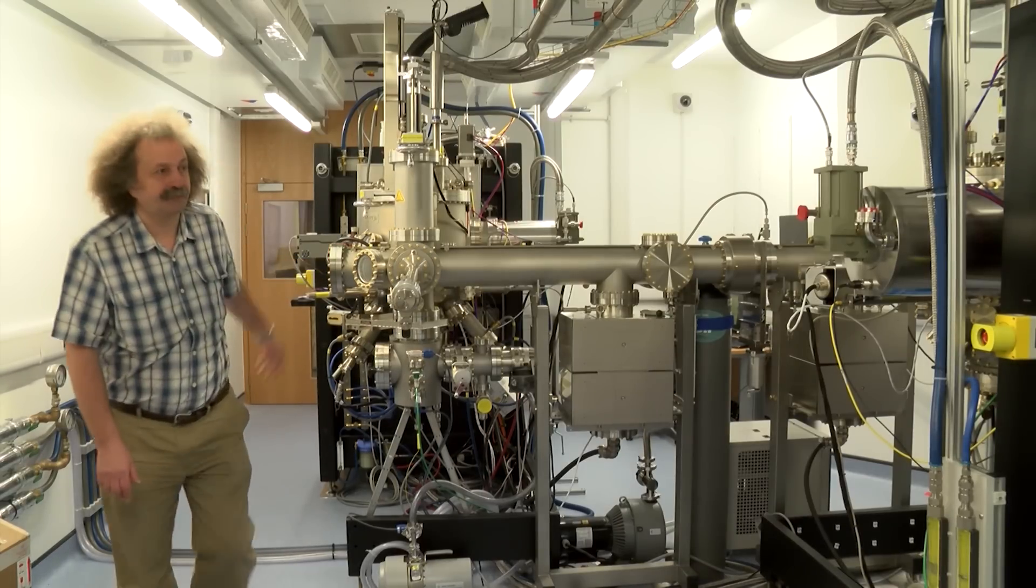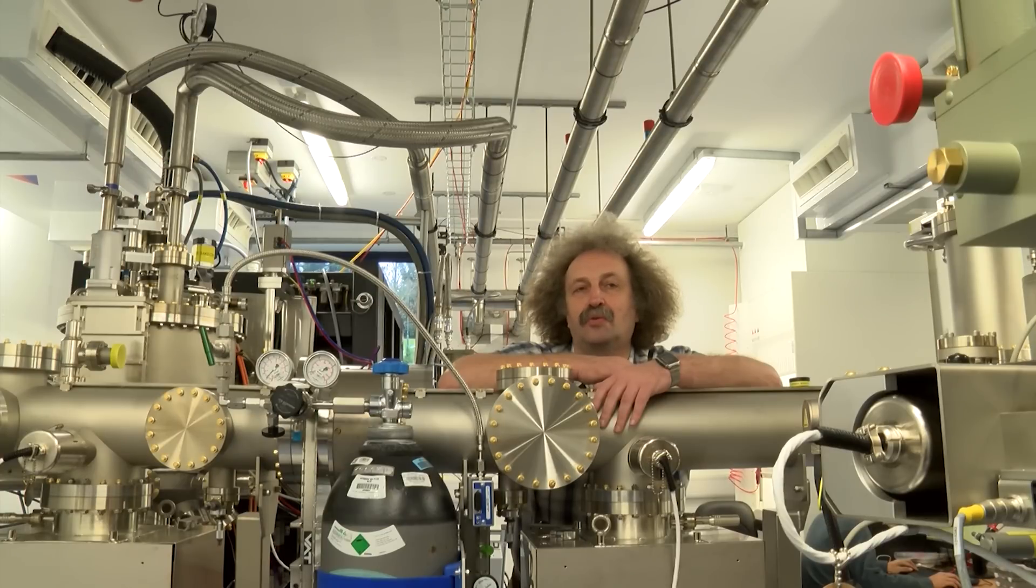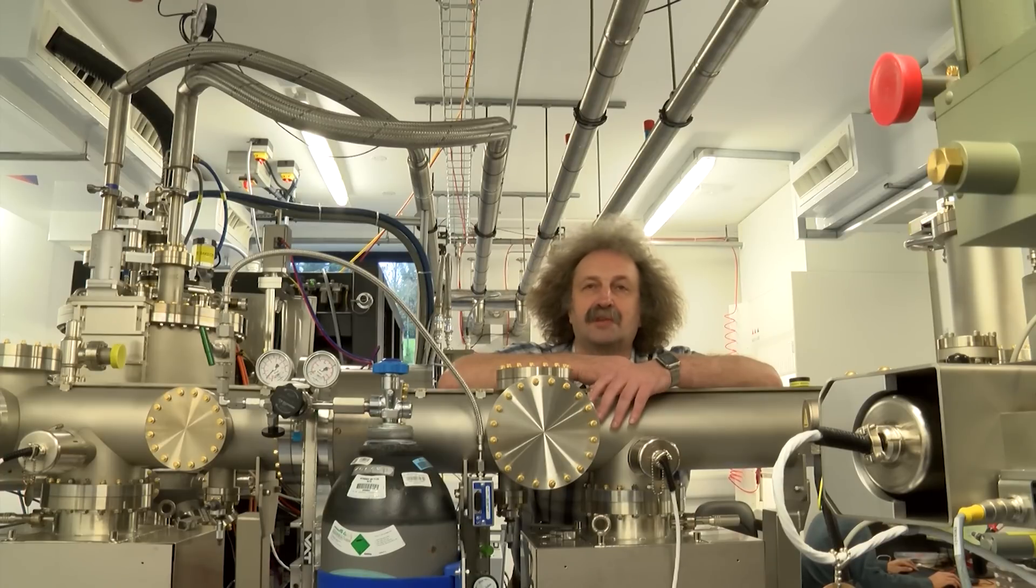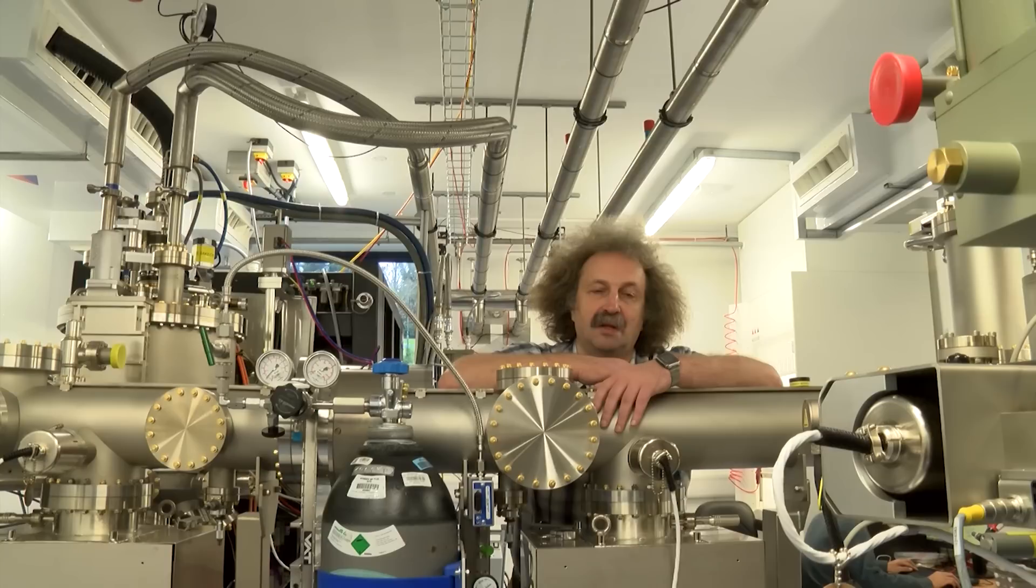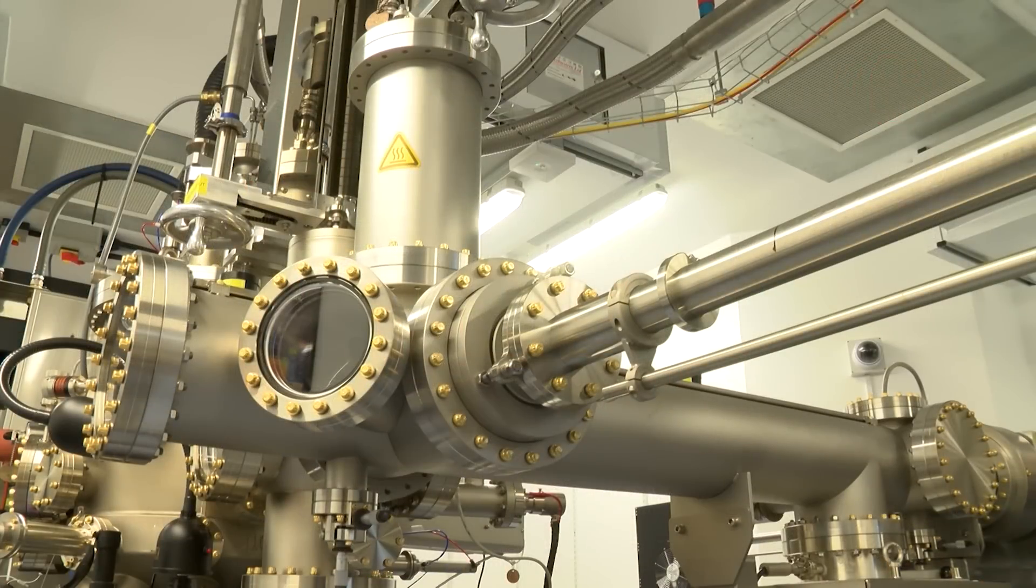So it was natural for us, after discovery of graphene in Manchester, to try to grow graphene layers by MBE. And we have tried to do it in the old system. Unfortunately, we have grown amorphous carbon because the temperature inside the system was very low. So we have realized 10 years ago that we need to develop an absolutely new molecular beam epitaxy system.